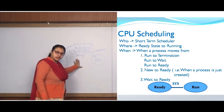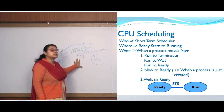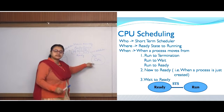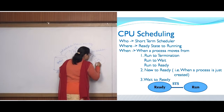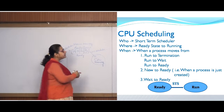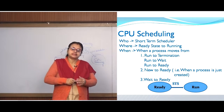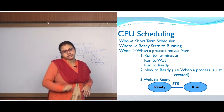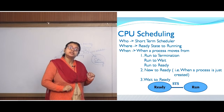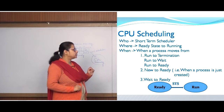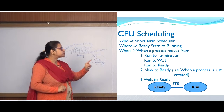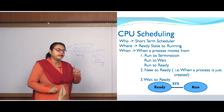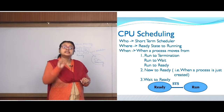The processes residing in the main memory's ready queue are in the ready state, and when they are taken inside the CPU they are in the running state. Which process goes from ready state to running state is the responsibility of the short term scheduler or CPU scheduler. It is invoked when a process moves from run to termination, run to wait, or run to ready.